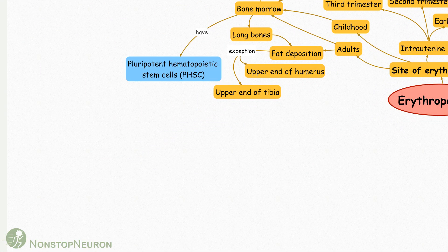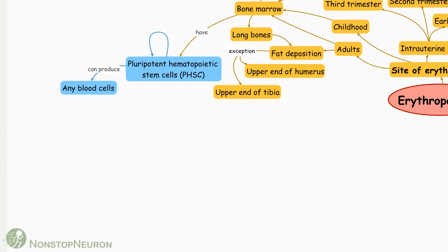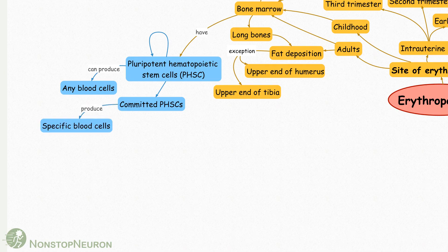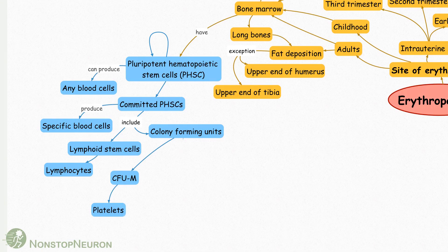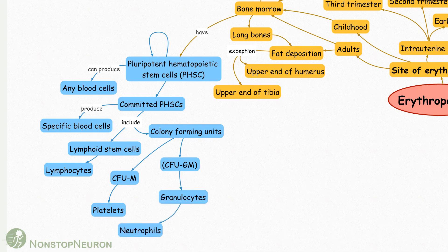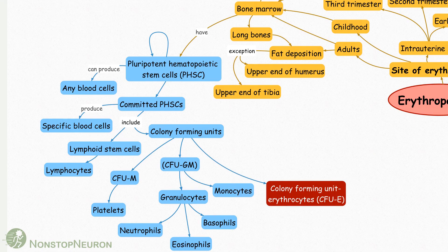Bone marrow has pluripotent hematopoietic stem cells. These cells can give rise to any blood cells. They produce copies of themselves to keep their supply intact, and also produce committed hematopoietic stem cells which are destined to produce specific blood cells. These include lymphoid stem cells, which give rise to lymphocytes, and colony-forming units like colony-forming unit megakaryocytes which produce platelets, colony-forming unit granulocyte-monocyte which give rise to granulocytes and monocytes, and finally the colony-forming unit erythrocytes.